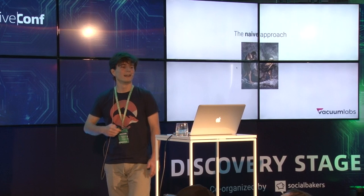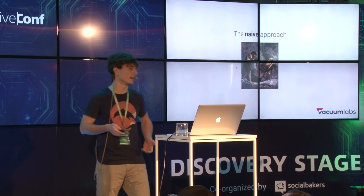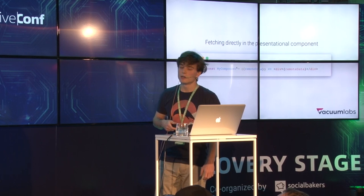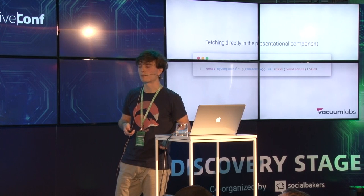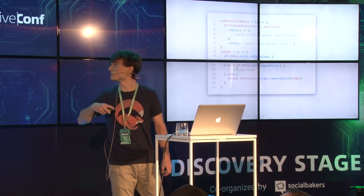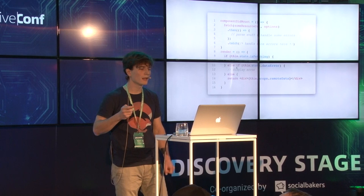Since this talk exists and since those frameworks exist, that means the naive approach probably had some problems. So let us first define those problems. What is the naive approach? You have your component, you need it to display some remote data. The most straightforward thing to do — something that all of us using React have probably done — is we fetch the data directly in the presentational component. We add some state, add some lifecycle methods, check whether we are still fetching or whether there has been an error, and finally display the remote data.